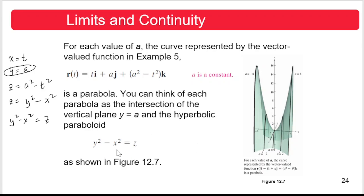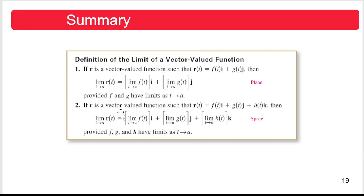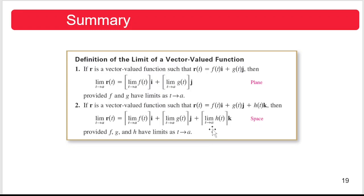In summary, the limit of a vector-valued function r(t) in two-dimensional space is the limit of f(t) as t approaches a times i, plus the limit of g(t) as t approaches a times j. In three-dimensional space, the limit of r(t) as t approaches a is the limit of f(t) times i, plus the limit of g(t) times j, plus the limit of h(t) as t approaches a times k — provided that the real-valued functions f, g, and h have limits as t approaches a.